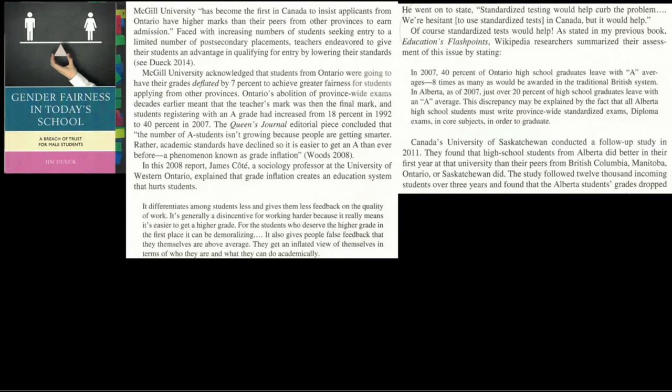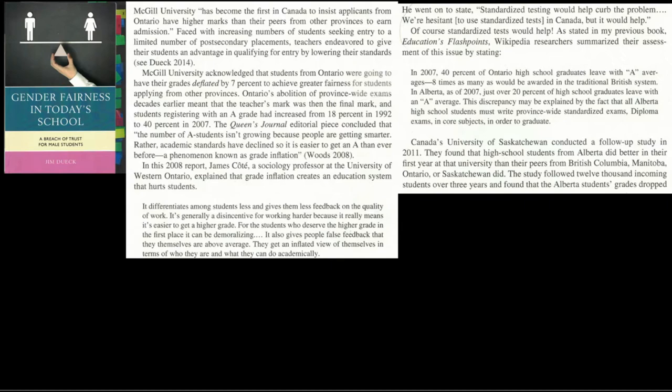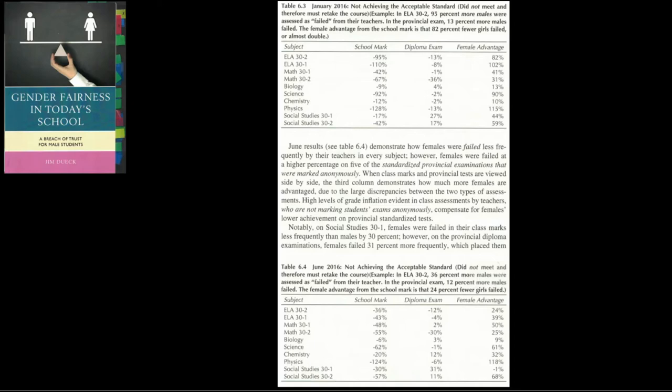Things are much better in BC than in Ontario. McGill University has revealed that it lowers the averages of applicants from Ontario high schools by 7% in recognition that grade inflation is especially terrible in Ontario. Jim Dueck's book comes from his observation that high school grade inflation in Canada mostly favors female students — the inflation of teacher assessments versus exams is greater for females than males, with more females who did not get A's on exams getting A's from teachers, and more males who passed exams getting failed by teachers.